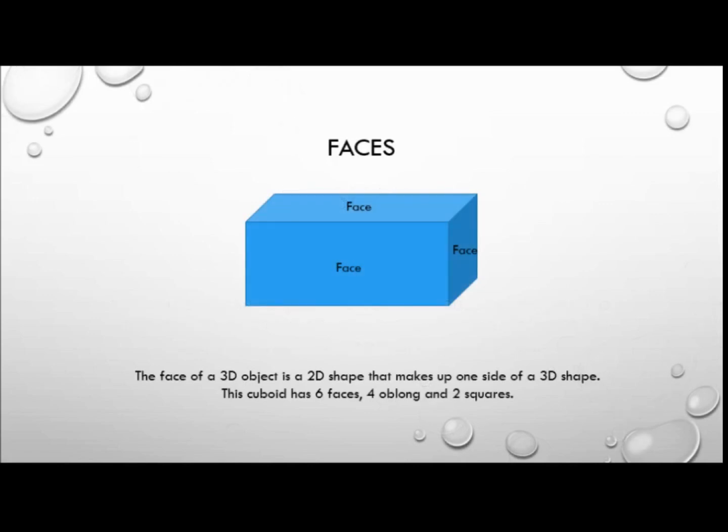The face of a 3D object is a two-dimensional shape that makes up one side of a three-dimensional shape when it's viewed edge on. This cuboid for example has six faces, four of which are oblong and two are square.